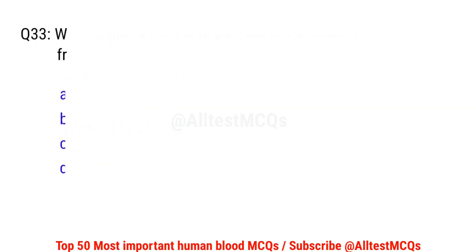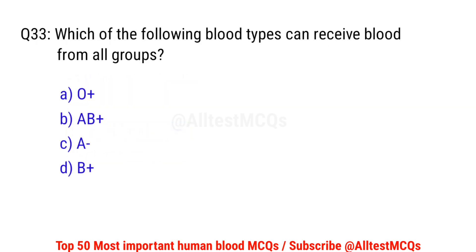Question number 33. Which of the following blood types can receive blood from all groups? Right option is B. AB positive.